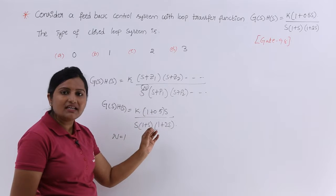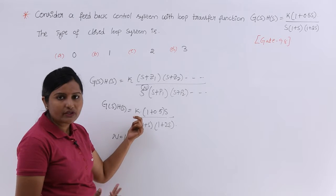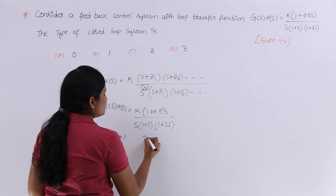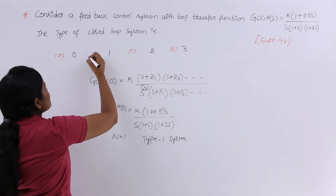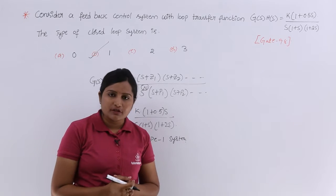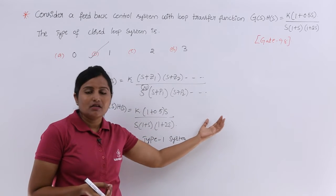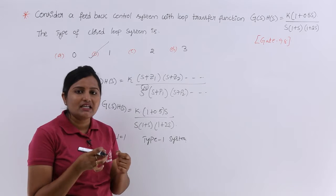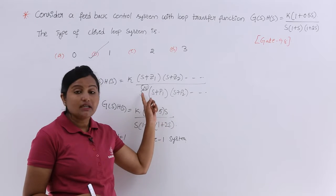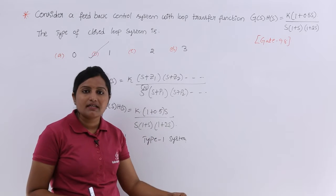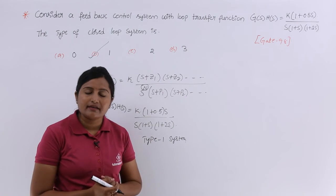This s term specifically indicates the type number of the system. In our problem, s power 1 is present, so this comes under type 1 system. Option B is the right answer for this problem. By knowing these simple points, you can get 1 or 2 marks in GATE. Type number of the system is a very simple topic — according to the s power in the denominator, you determine the type number.